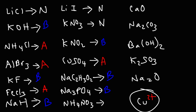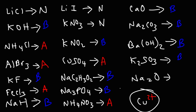Ammonium nitrate: nitrate is neutral, but ammonium is acidic. Calcium oxide: the oxide part makes it basic. Sodium carbonate: carbonic acid is a weak acid, so carbonate is a basic ion. Barium hydroxide: whenever you see hydroxide, it's basic. K2SO3 comes from sulfurous acid (H2SO3), which is a weak acid — thus SO3 2- is a basic ion. Sodium oxide: oxide is a strong base, so that's basic as well.